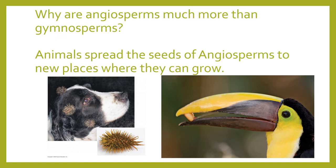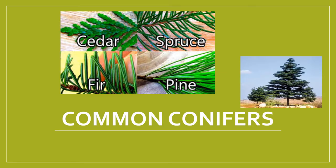We're comparing seeds of angiosperms and gymnosperms — just as seeds have an advantage over spores, the seeds of angiosperms have an advantage over gymnosperms because animals can easily spread them to new places. You can see a dog with seeds stuck to its fur — when it travels to a new place and shakes them off, they drop somewhere new to grow. Birds that swallow fruits will drop seeds in whole new places through their droppings. The most common conifers are cedar, spruce, fir, and pine — all evergreen trees with needle-like leaves.